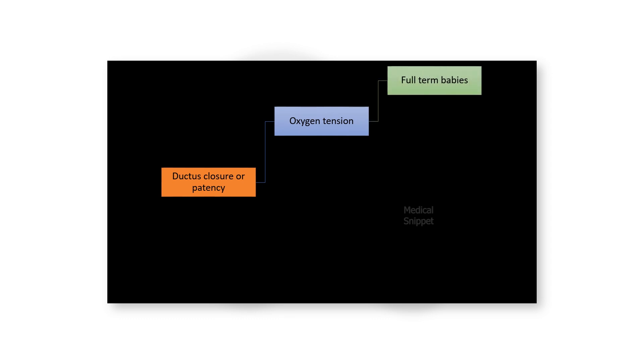Ductus closure and patency are mediated by many vasoactive agents, but the two important factors are oxygen tension and prostaglandins. Full-term babies are more sensitive to oxygen tension; a rise in PO2 after birth causes ductal constriction and closure.